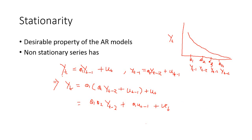Taking the AR(1) model: yt equals theta1 times yt minus 1 plus the disturbance term ut. This assumes a zero-mean series with no constant term. We can write yt minus 1 as another AR(1) model: yt minus 1 equals theta1 times yt minus 2 plus ut minus 1. We can further write yt minus 2 in terms of yt minus 3, and yt minus 3 in terms of yt minus 4, and so on — this substitution continues indefinitely.